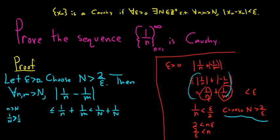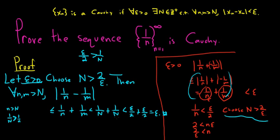We know that big N is bigger than 2 over epsilon, so if you divide through, you get that 1 over N is less than epsilon over 2. So 1 over n is less than epsilon over 2, meaning the whole expression is less than epsilon over 2 plus epsilon over 2, which equals epsilon. That completes the proof. Given any epsilon greater than 0, we use the Archimedean property to choose a natural number N bigger than 2 over epsilon, such that for all little n and little m bigger than capital N, the distance between 1 over n and 1 over m can be made infinitely small. That's how you prove that 1 over n is a Cauchy sequence.